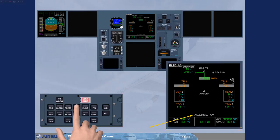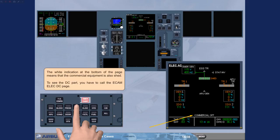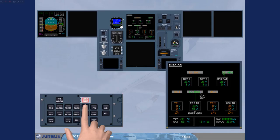The white indication at the bottom of the page means that the commercial equipment is also shed. To see the DC part, you have to call the ECAM Electrical DC page. Notice the emergency generator supplying the essential TR, which in turn supplies the DC essential bus. The DC essential shed bus is also shed due to the limited power of the RAT.